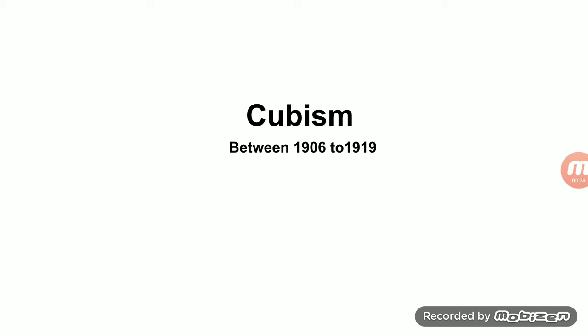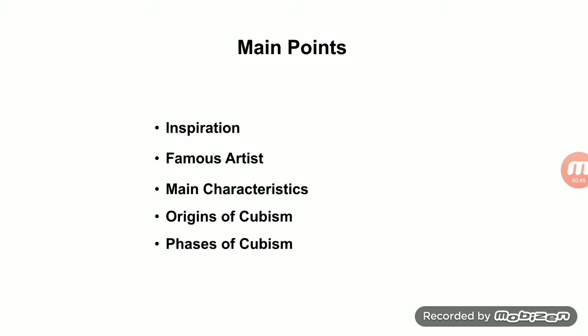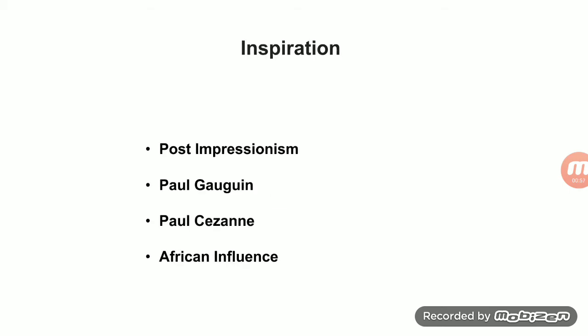Cubism is one of the prominent modern movements. The artists of this movement were prominently famous because of their style and new techniques. Today we discuss the main points: inspiration, famous artists, main characteristics of Cubism, origin of Cubism, and phases of Cubism.